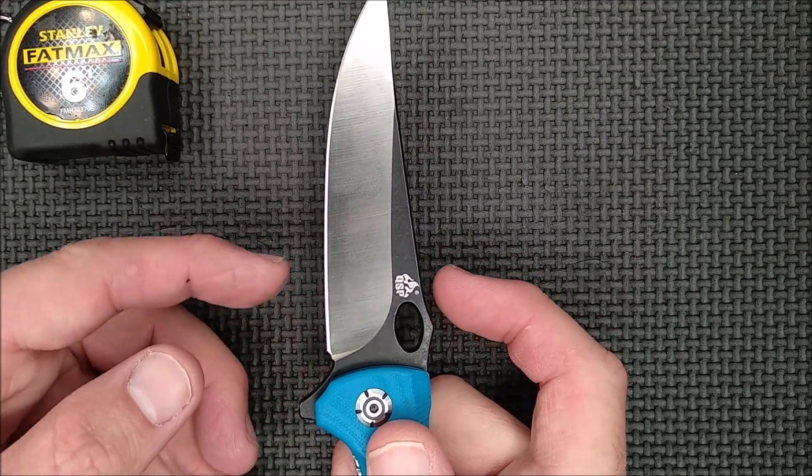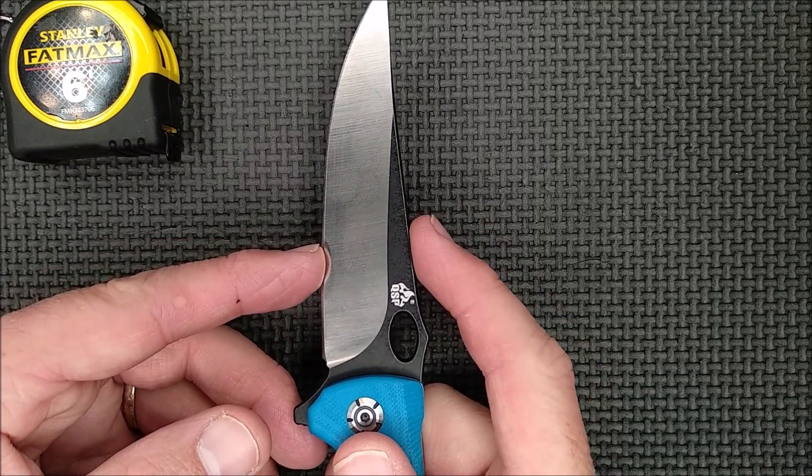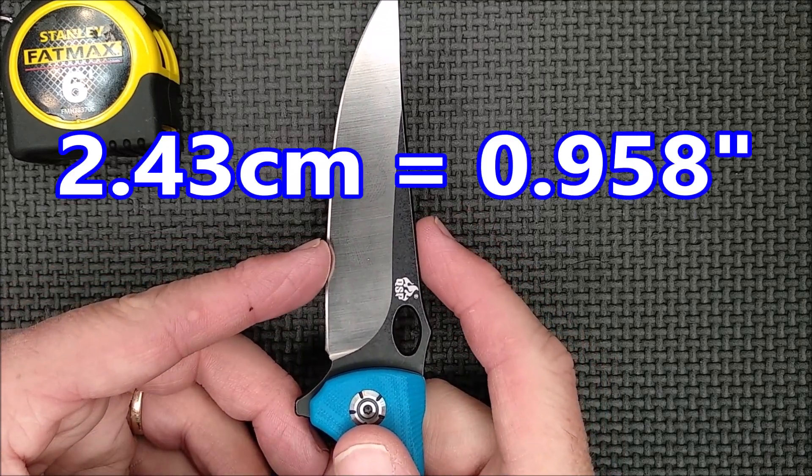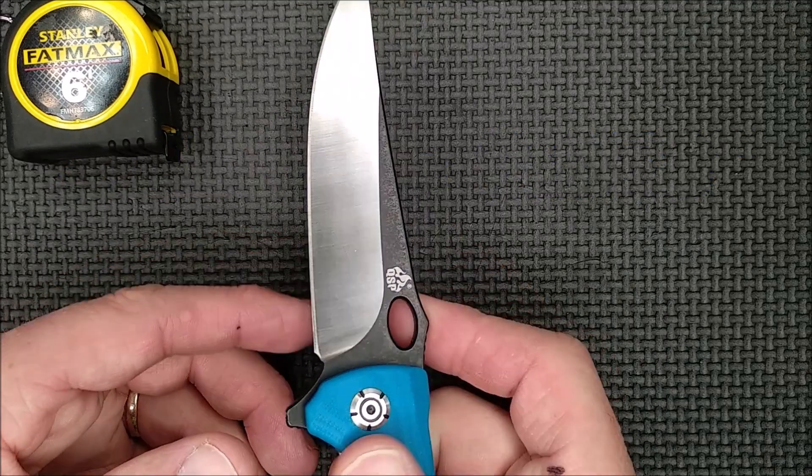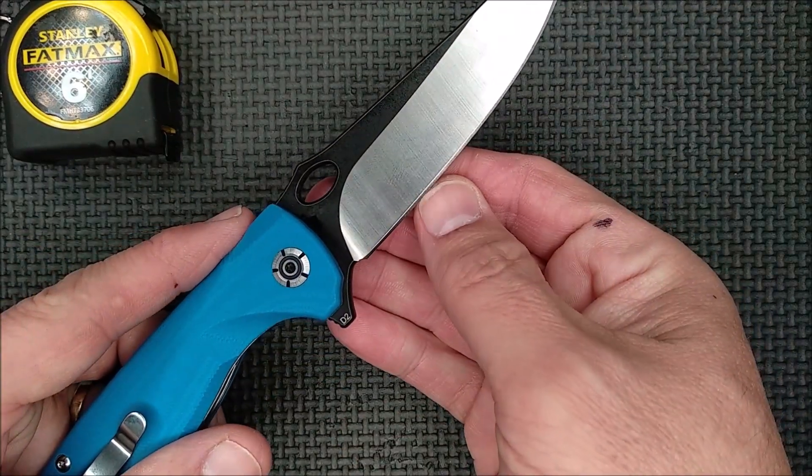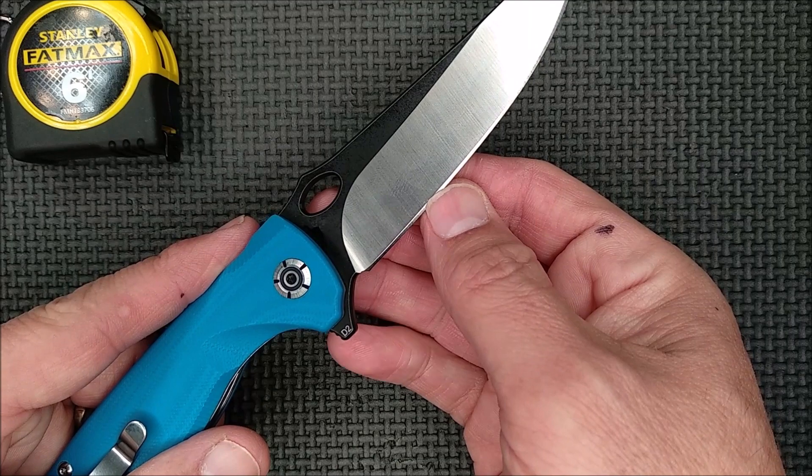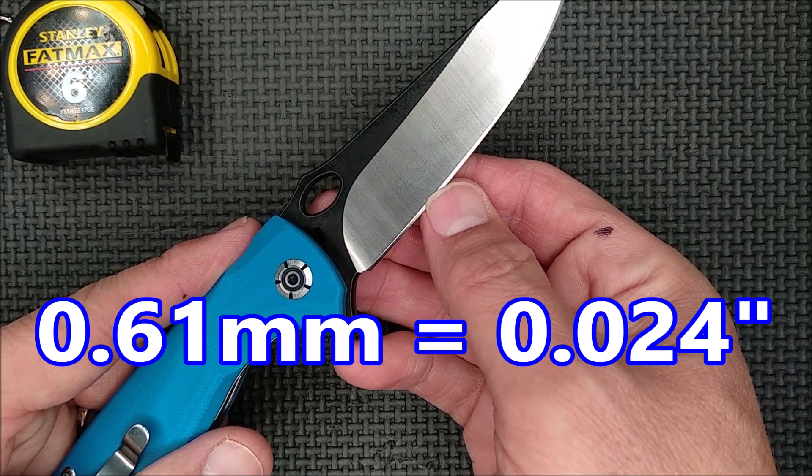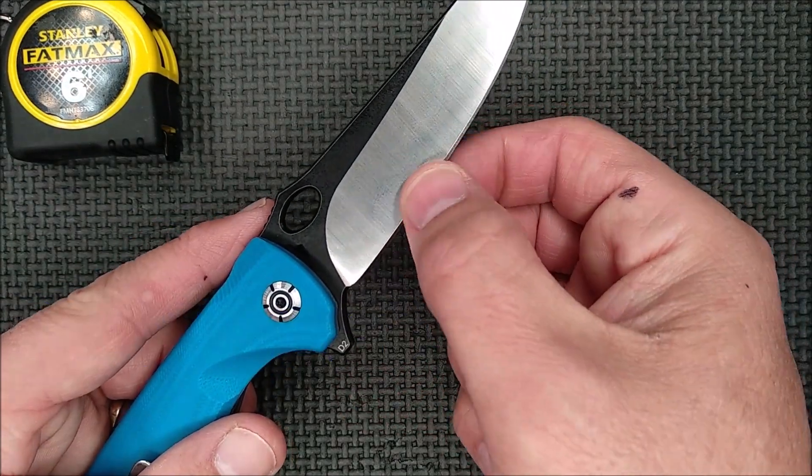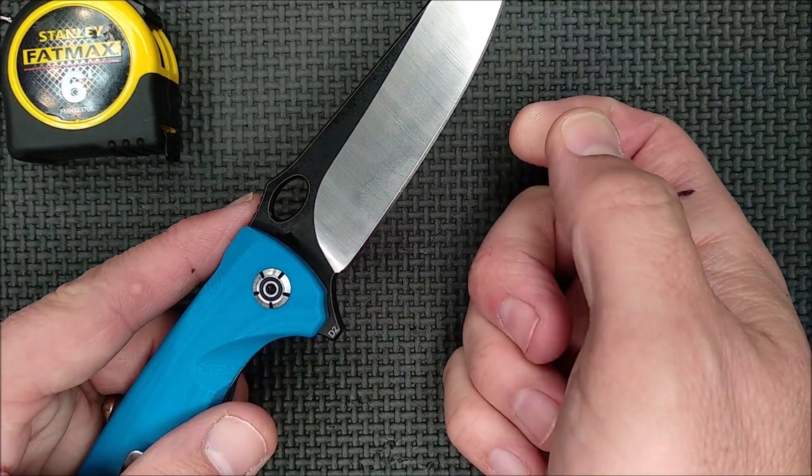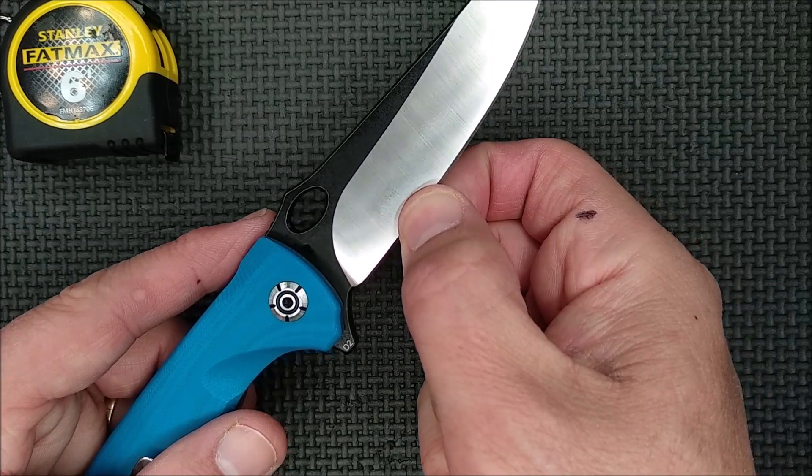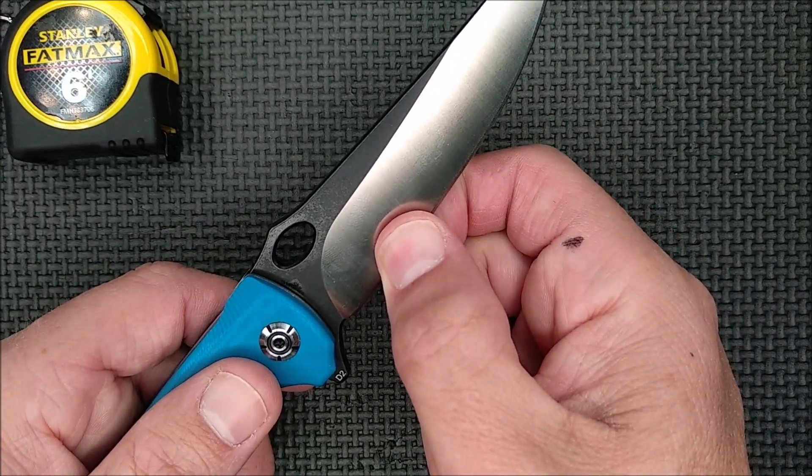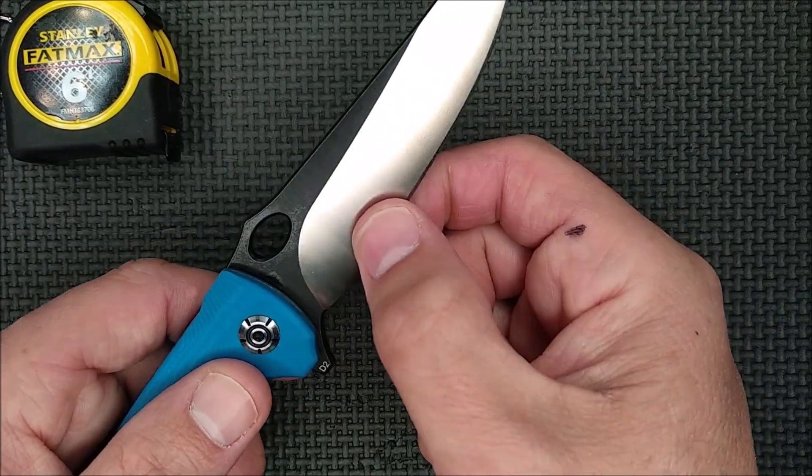Blade depth? I measure it one inch up from the sharpener's choil. 2.43 centimeters, 0.958 of an inch. The thickness of the edge behind the grind, again at that one inch spot, 0.61 millimeters, 0.24 thousandths of an inch. I do wish it was a little bit thinner. 0.24 thousandths isn't bad, but I would like it to be closer to 20. So that's about half a millimeter, 0.20 thousandths.